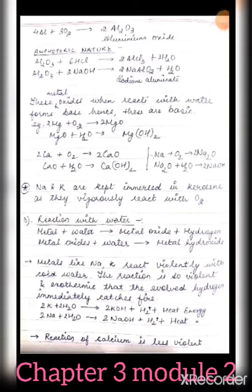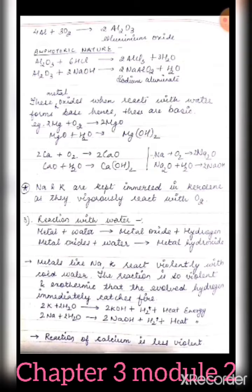Apart from amphoteric oxides, other metal oxides are basic in nature. For example, magnesium oxide, calcium oxide, and sodium oxide — when dissolved in water they give magnesium hydroxide, calcium hydroxide, and sodium hydroxide respectively. All of these produce bases or alkalis, so they are basic in nature.